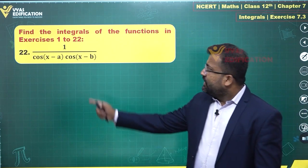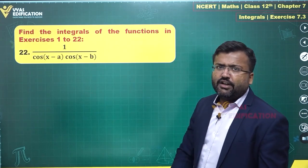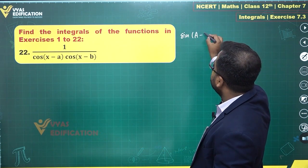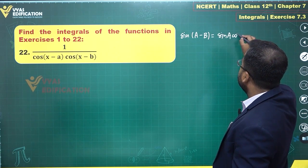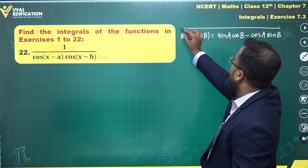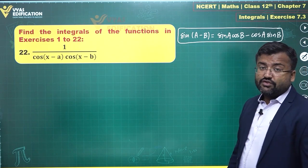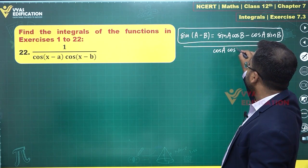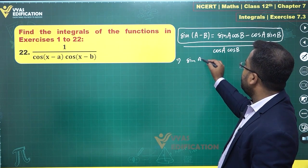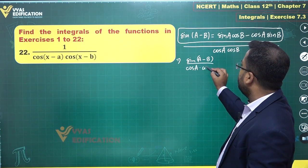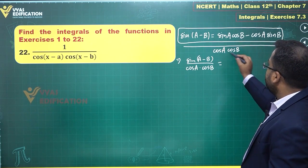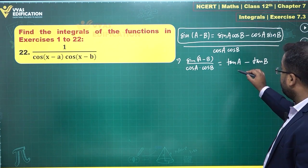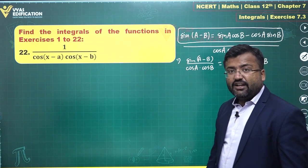You need to apply a very peculiar step. When you have cos and cos in the denominator, remember that sin(a - b) = sin(a)cos(b) - cos(a)sin(b). If you divide this expression throughout by cos(a)·cos(b), you get sin(a - b) / (cos(a)·cos(b)) = sin(a)cos(b)/(cos(a)cos(b)) - cos(a)sin(b)/(cos(a)cos(b)), which simplifies to tan(a) - tan(b).